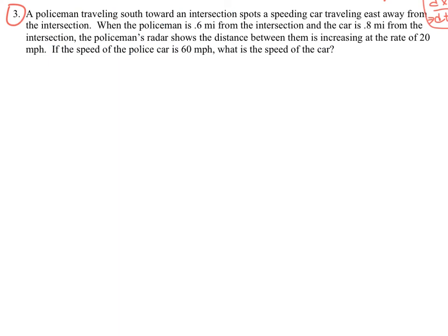Now, number three, a policeman is traveling south toward an intersection and spots a speedy car traveling east away from the intersection. The policeman is 0.6 miles from the intersection, and the car is 0.8 miles from the intersection. The policeman's radar shows the distance between them is increasing at a rate of 20 miles per hour. If the speed of the police car is 60 miles per hour, what is the speed of the car? Well, we need a diagram definitely for this. So if the policeman is traveling south, we can represent that as just a line segment going this way. And then the car is at the intersection, goes beyond it, traveling east, so we can represent it with the segment that way. And the distance between the two is this segment right here. So I do have a right triangle. We can call this x, we can call this y, and we can call this z. That's my right triangle representation again.